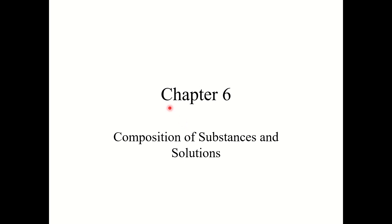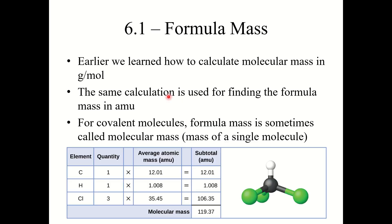Chapter 6: Composition of Substances and Solutions. We'll begin with Section 6.1, Formula Mass. Earlier in this course, back in Chapter 2, we learned how to calculate molecular mass or molar mass, more specifically in grams per mole. Now this same calculation is used for finding the formula mass in AMU — atomic mass units.